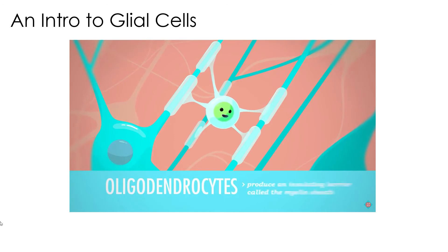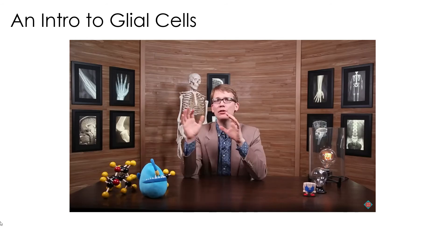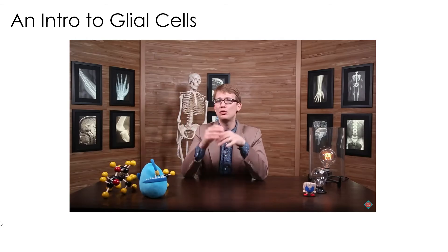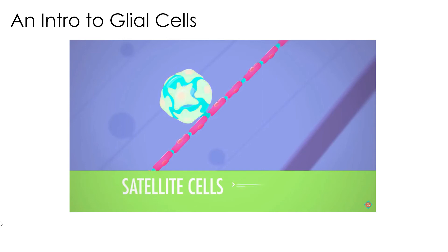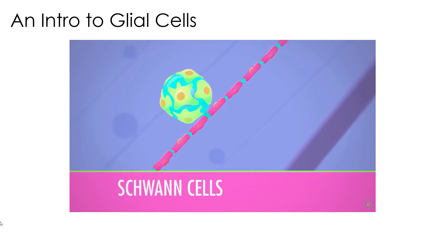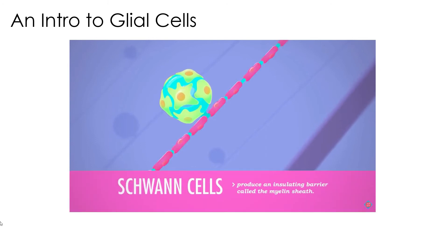Your central nervous system's oligodendrocytes wrap around neurons, producing an insulating barrier called the myelin sheath. Over in your peripheral nervous system, there are just two kinds of glial cells. Satellite cells do mainly in the peripheral system what astrocyte cells do in the central system — they surround and support neuron cell bodies — while Schwann cells are similar to oligodendrocytes in that they wrap around axons and make that insulating myelin sheath.